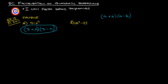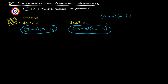The next one is also a perfect square minus a perfect square. I'm just going to take the square root of both of these. Square root of 4 is 2, square root of x squared is x, and square root of 25 is 5. So we get (2x plus 5)(2x minus 5). That's just a nice little difference of squares problem.